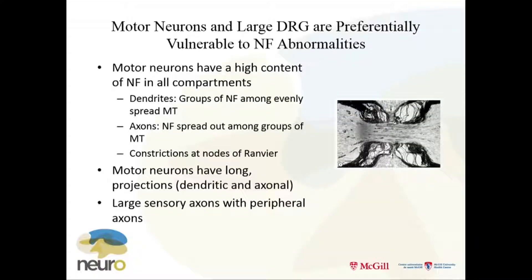Motor neurons and larger DRG neurons are particularly vulnerable to these disorders because they're big — they have long projections. For motor neurons, their dendrites go up several segments and branch all over the place. Both DRG and motor neurons have long axons to the periphery. Unlike in the brain where there's not a lot of neurofilament in perikaryon dendrites, motor neurons are unique — they have high content of neurofilaments in both their perikaryon and their dendrites.